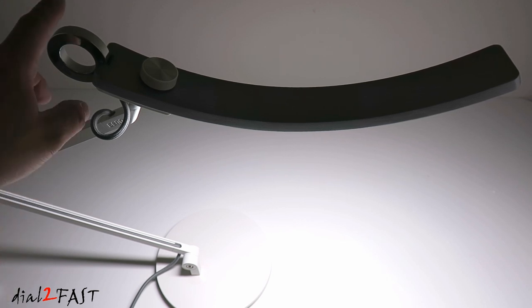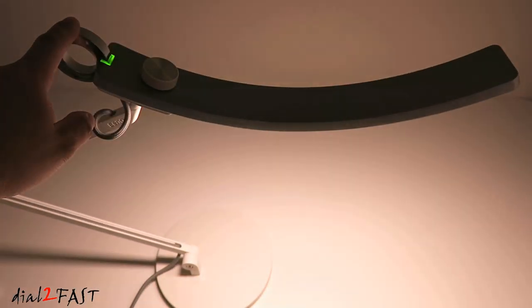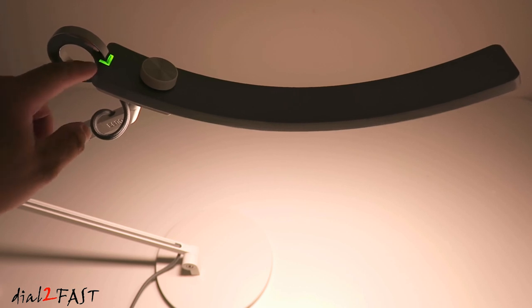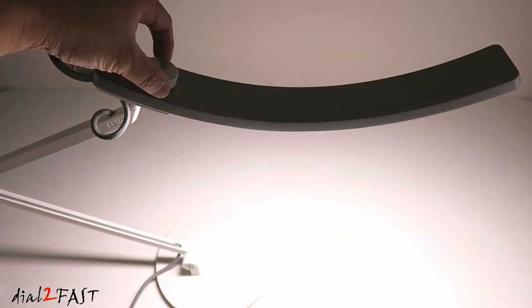And to enable it, all you have to do is touch this ring for two seconds. And you'll see the indicator at the top will be green and the light is automatically adjusted. And of course you can manually override this by making adjustments to it.